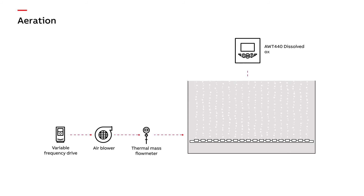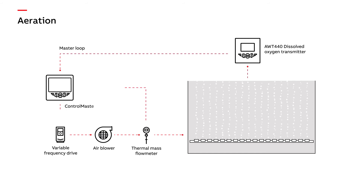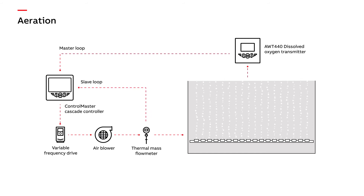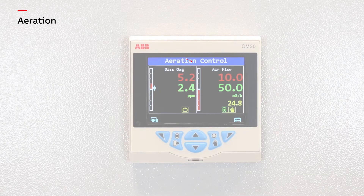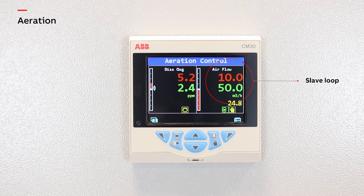Using ABB's Optical Dissolved Oxygen System, accurate, real-time dissolved oxygen readings can be fed into the ControlMaster range of PID controllers. With its full-color TFT display and easy-to-navigate menu structure, ControlMaster simplifies the installation and configuration process, helping achieve efficient control of your aeration process.